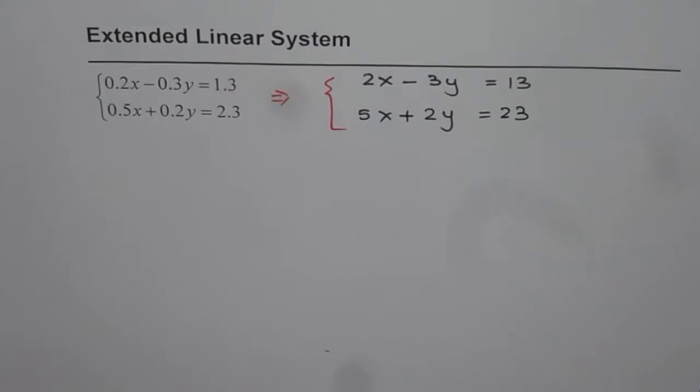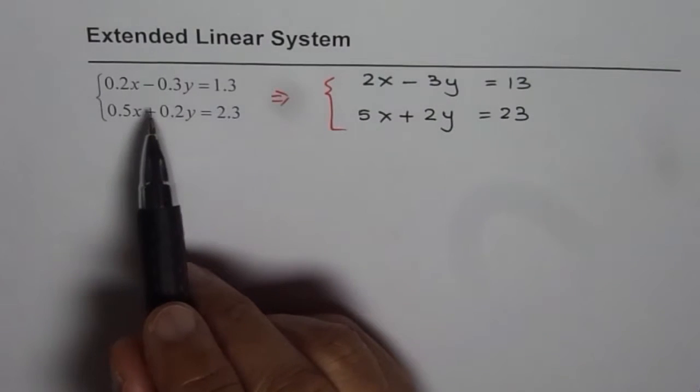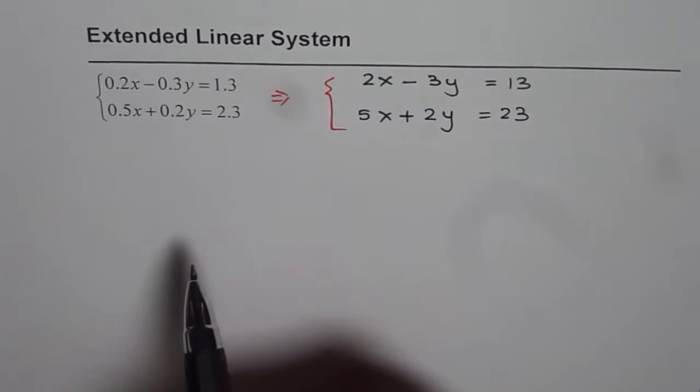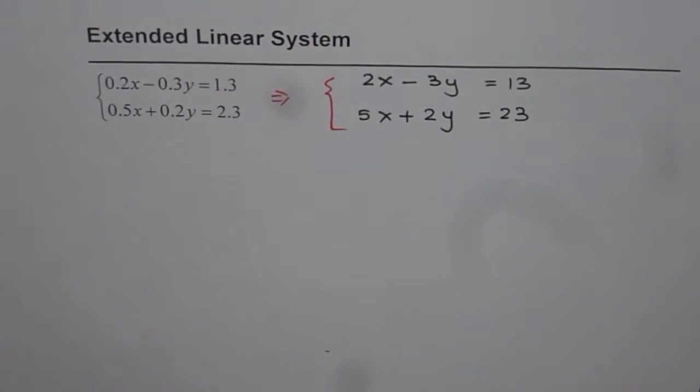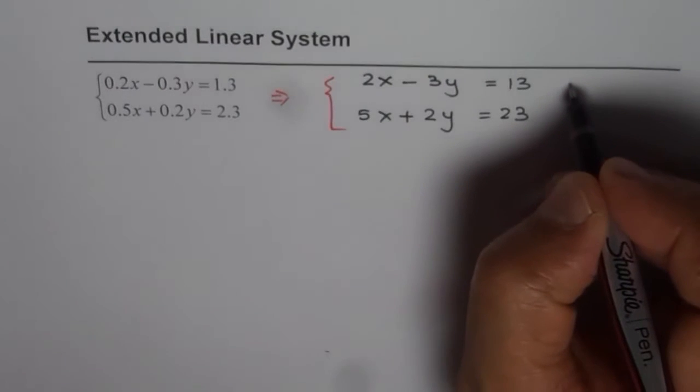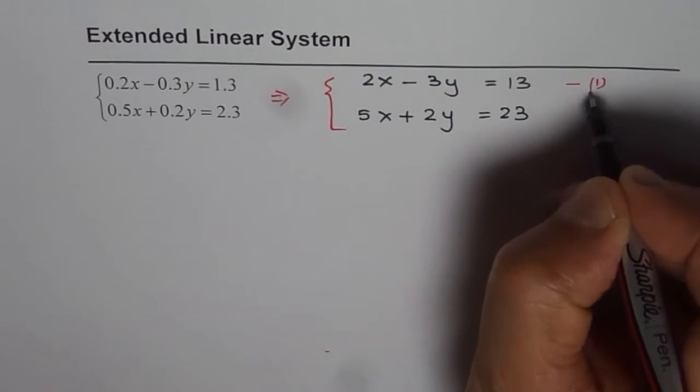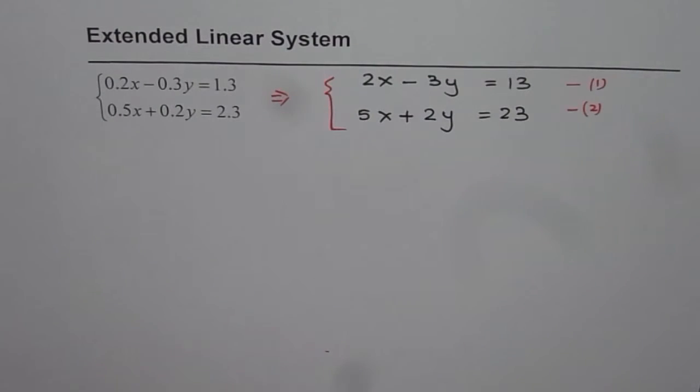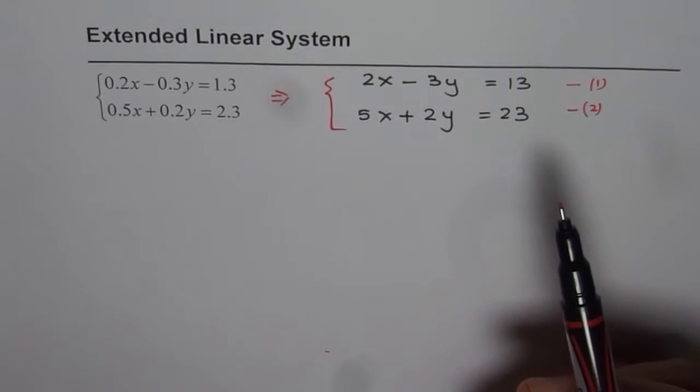So I feel that whenever you are having decimals or fractions then better is to convert them to whole numbers like we have done. Now we have two different equations which are linear equations without decimals. Let's name them as equation 1 and 2. So let's apply the method of elimination.